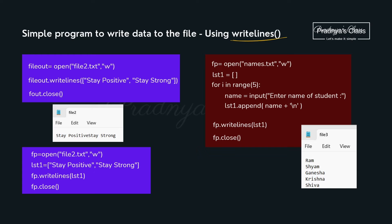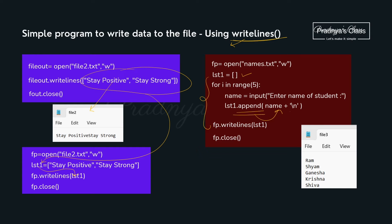Now let's apply the writelines() function to write data to the file. The writelines() function takes data in the form of a list, so you can directly write the list. If you don't want to write the list directly in the function, take it in a variable and specify that variable in writelines(). Using a for loop you can take list elements one by one — we create one empty list and use the append function to add names. To write names on new lines, we concatenate backslash n to each element of the list.